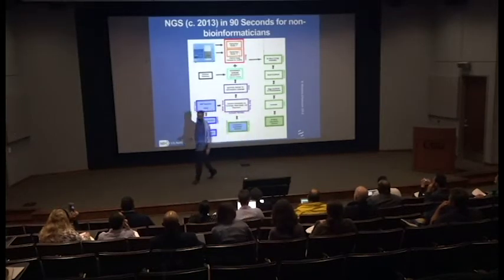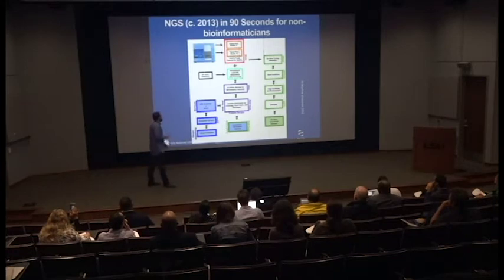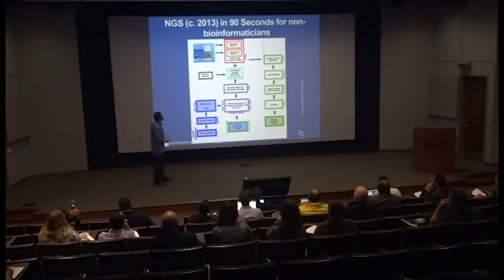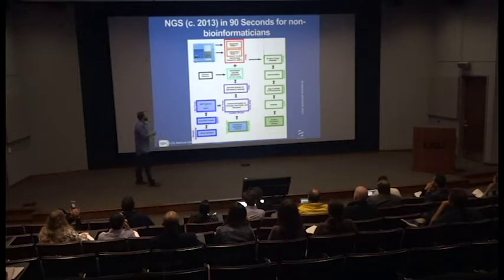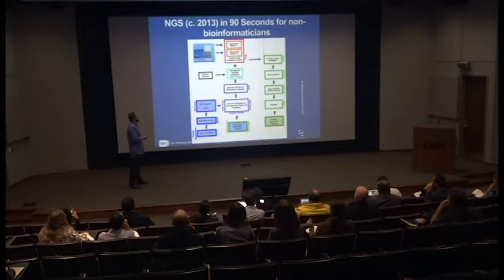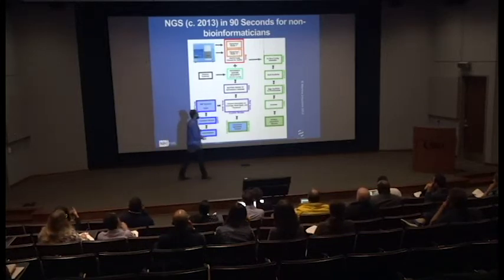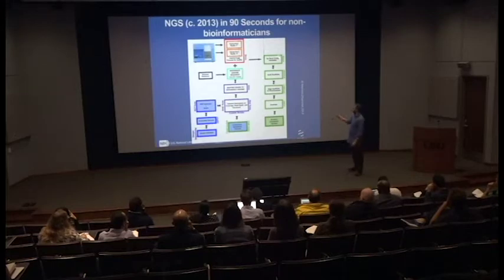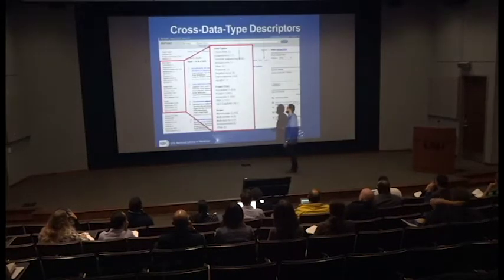For those who don't do next-generation sequencing, this is a diagram on basically what we're doing. We do sequencing — now that's a lot of long read. We often compare to a reference and map, look for variants, look for expression, or do de novo assembly. We do a lot of this with metagenomes too, both de novo and mapping.